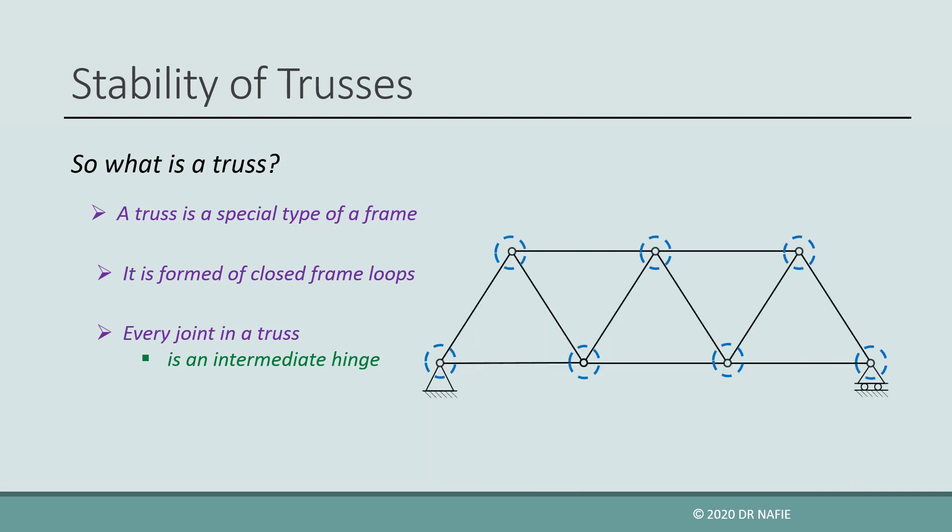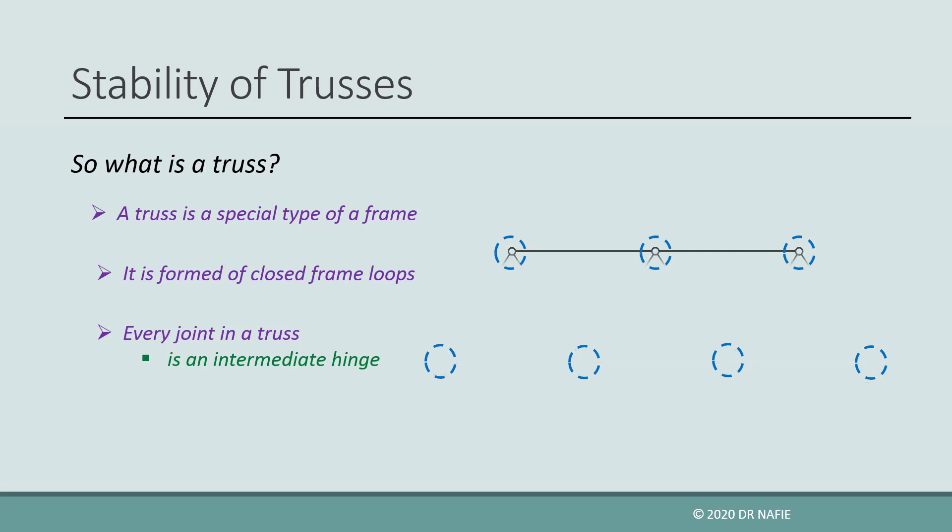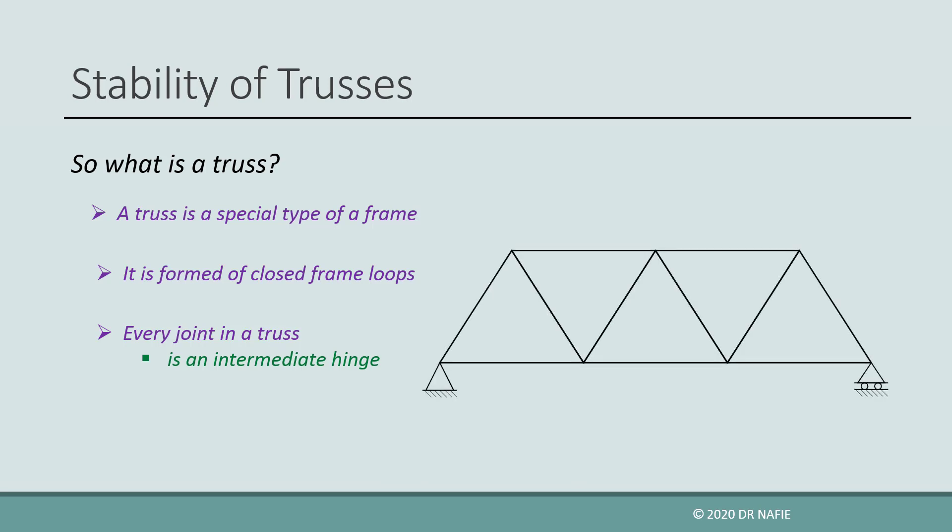Most of the time, however, we do not draw the hinges in order to simplify the drawings. Whether we draw the hinge or not, since we call the structure a truss, the presence of the hinges is implied.